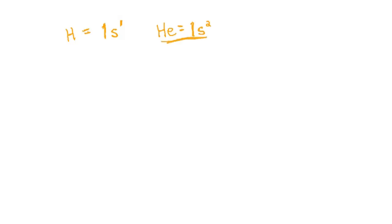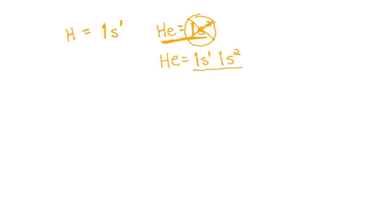When we write down helium, we don't just write 1s2 because of details that matter in further chemistry. We have to write down everything that came before it — so we write hydrogen first, which is 1s1, and then we write 1s2. So the full configuration for helium is 1s1, 1s2.